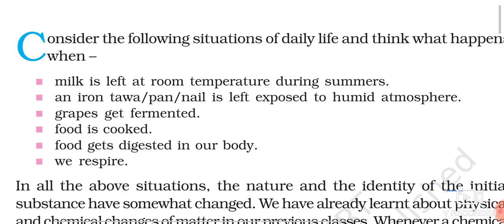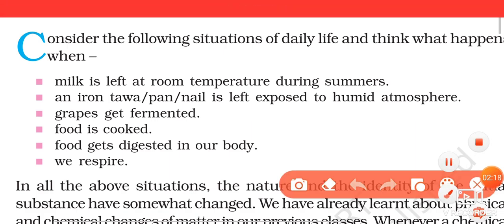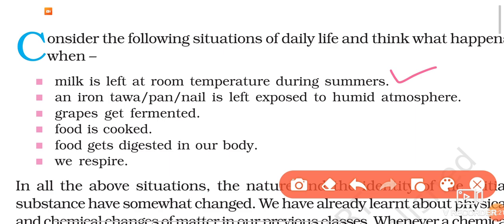Here are some visible examples of chemical reactions. Think about what happens when milk is left at room temperature during summers — it spoils, and its odor, appearance, and taste change. In the same way, when an iron nail is left exposed to a humid atmosphere, the iron gets converted into rust.